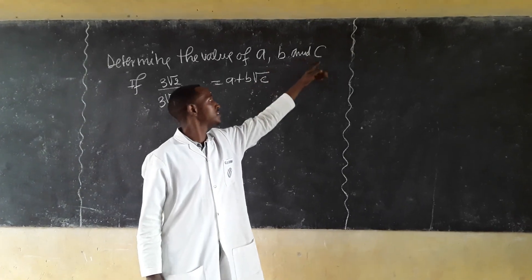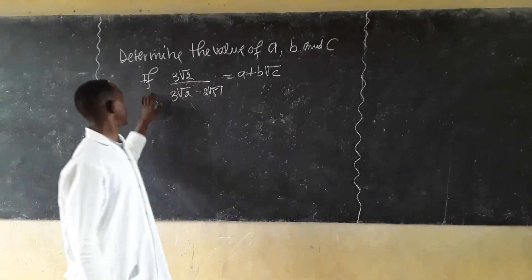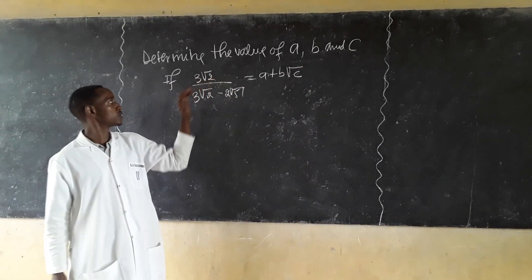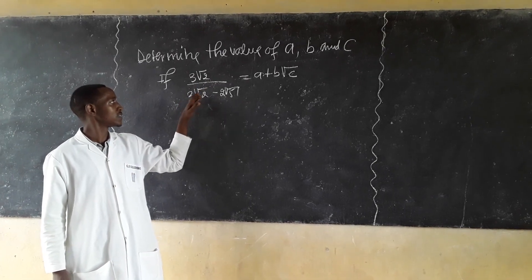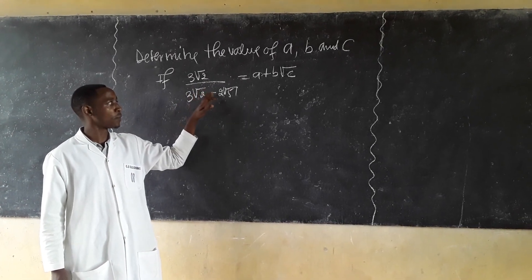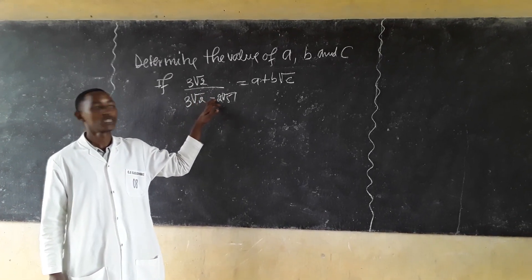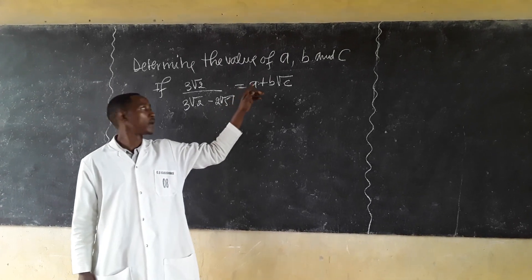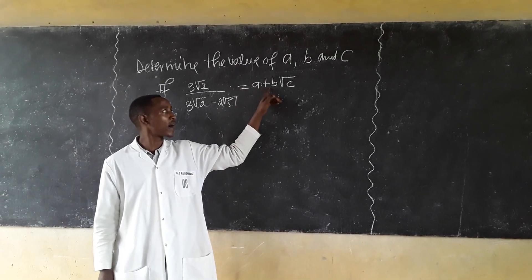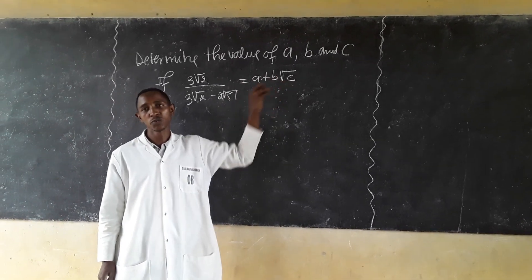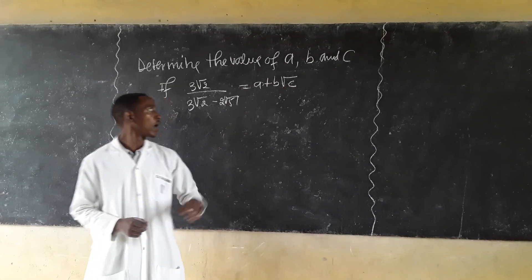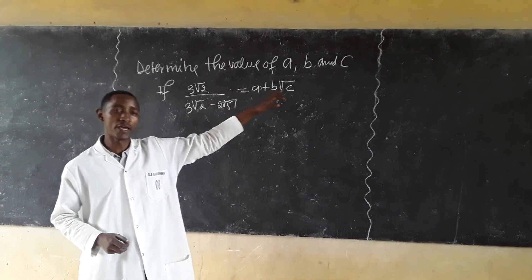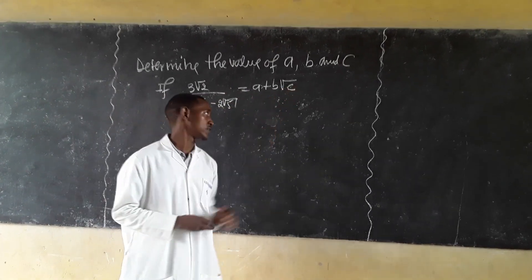Find A, B, and C. If 3√2 divided by (3√2 minus 2√5) is equal to A plus B√2 times C, how do we solve this? How do we find A, B, and C?